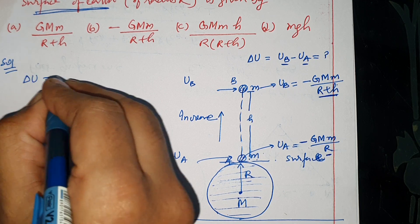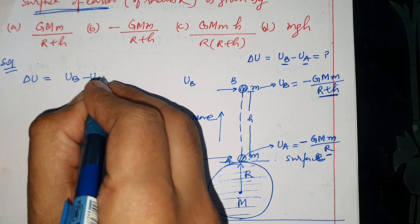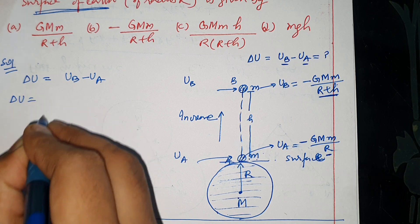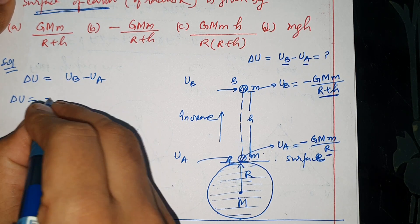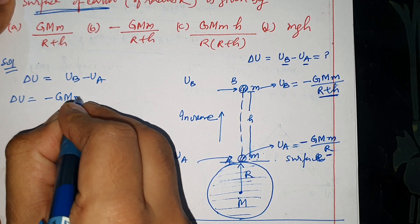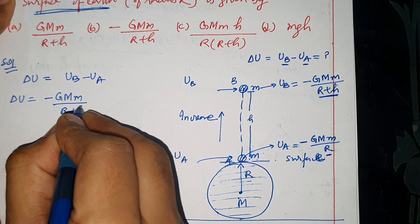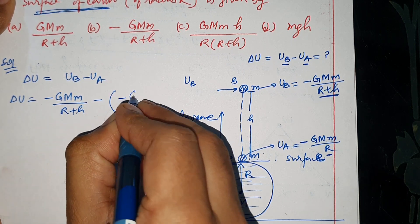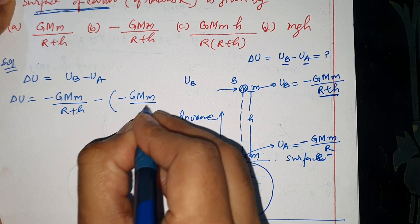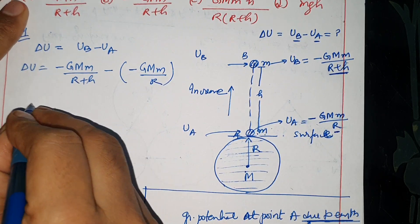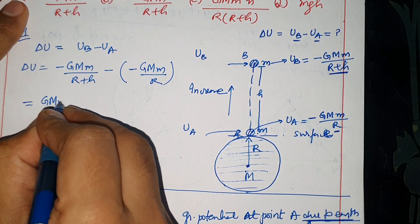Now calculate delta U: Ub minus Ua. Delta U equals Ub minus Ua. Put the values: minus G capital M small m over R plus h minus minus G capital M small m by capital R. Taking GMm common, plus and minus gives plus.